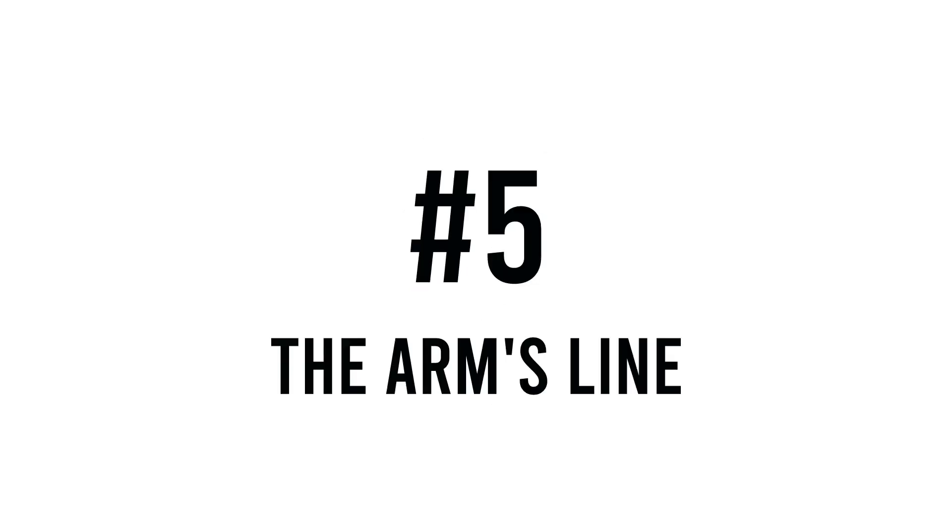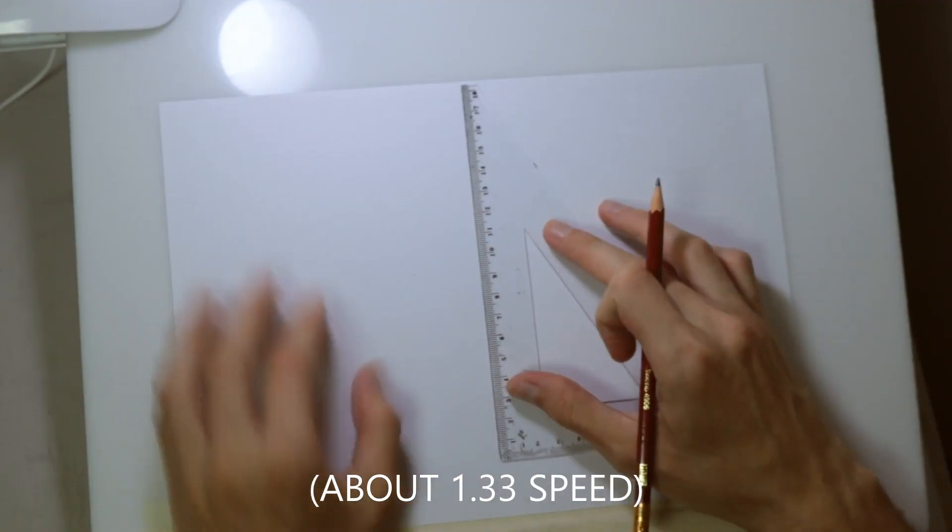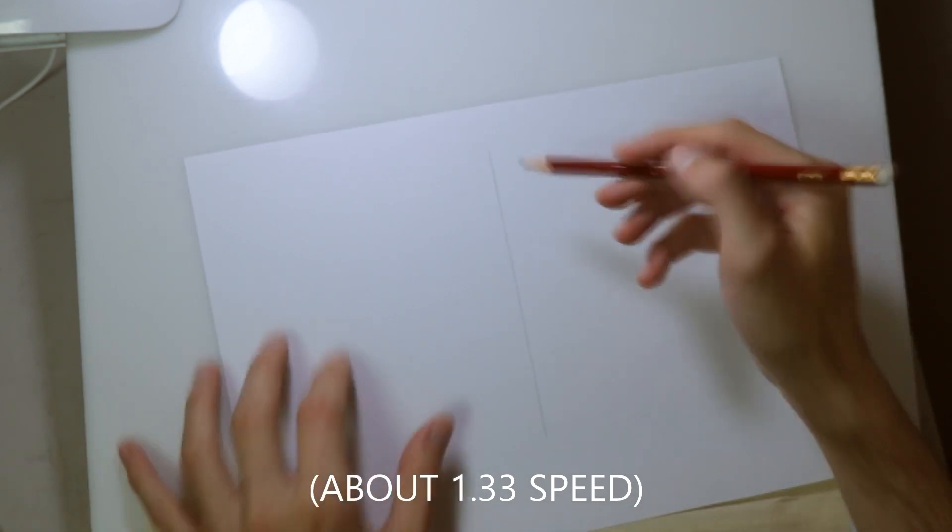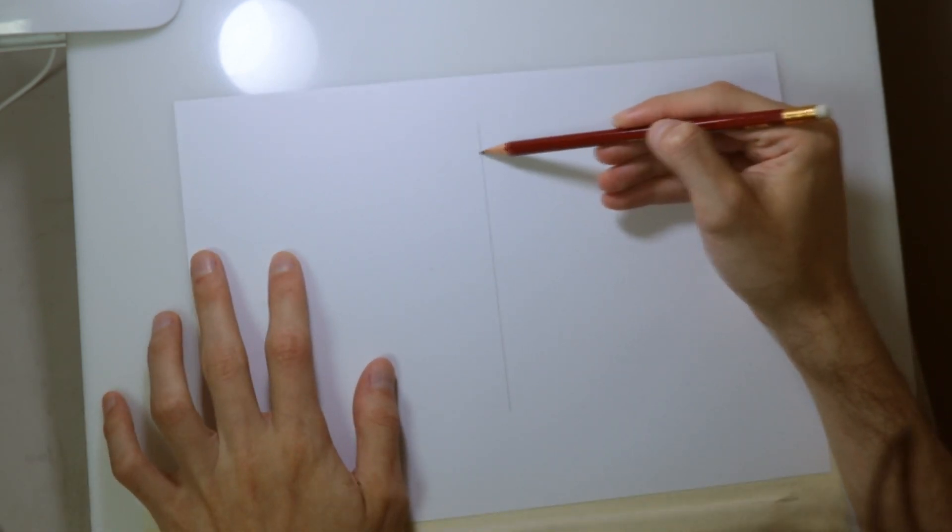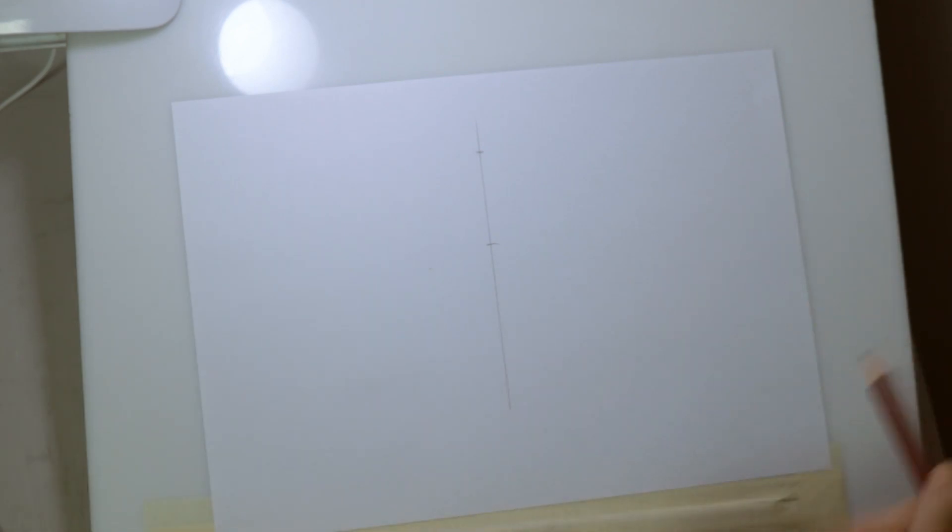And finally, number 5 is that the arm doesn't follow a completely straight line. That would look really stiff. In the front view it actually looks more like this. It's very subtle. An easy way to get this is to draw a straight line at the center of the arm when we start drawing, and then make sure that more than half of the wrist is on the outer side of that line.